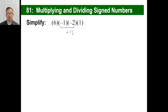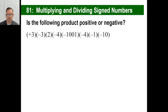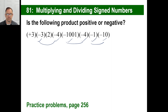How about this one — is the product going to be positive or negative? Count the negative factors: one, two, three, four, five, six. These two cancel each other out, these two cancel each other out, and these two cancel each other out. So the answer is going to be positive.